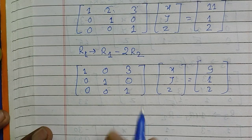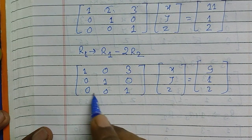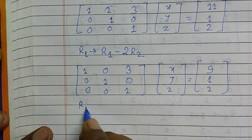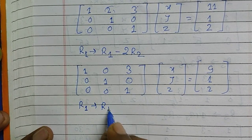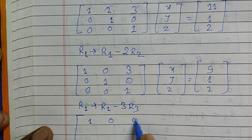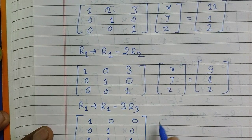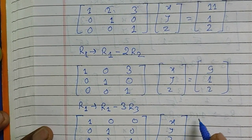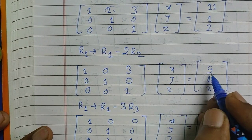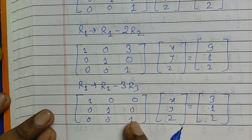Our final operation is to eliminate the 3 in the third column of R1. We apply R1 implies R1 minus 3R3. This gives the identity matrix: [1, 0, 0 | 3], [0, 1, 0 | 1], [0, 0, 1 | 2] for x, y, z. The right-hand side for R1 becomes 9 minus 3×2 equals 3.